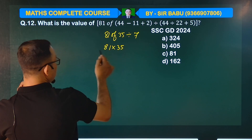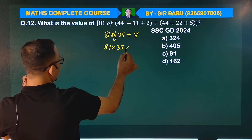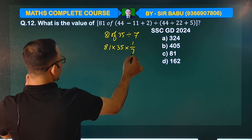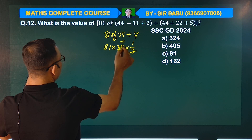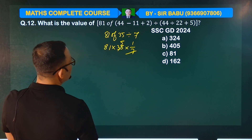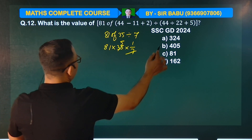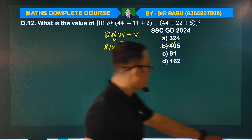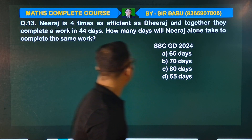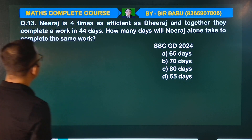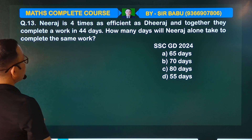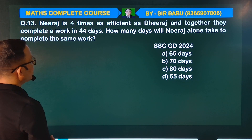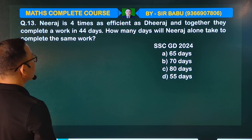How many days will Niraas alone complete the work? Niraas is 4 times as efficient as the other person, and together they complete the work in 40 days. How many days will Niraas alone take?